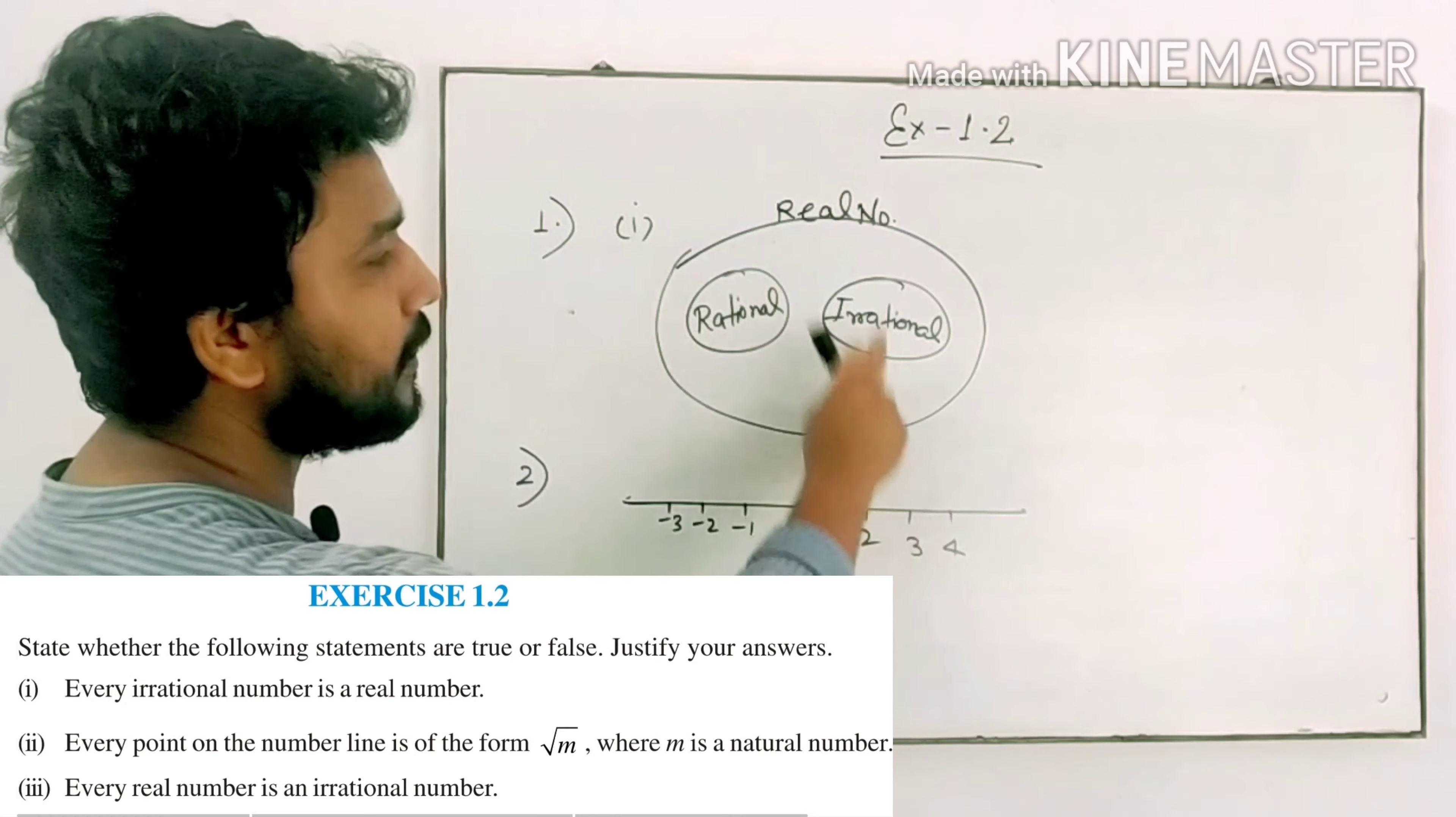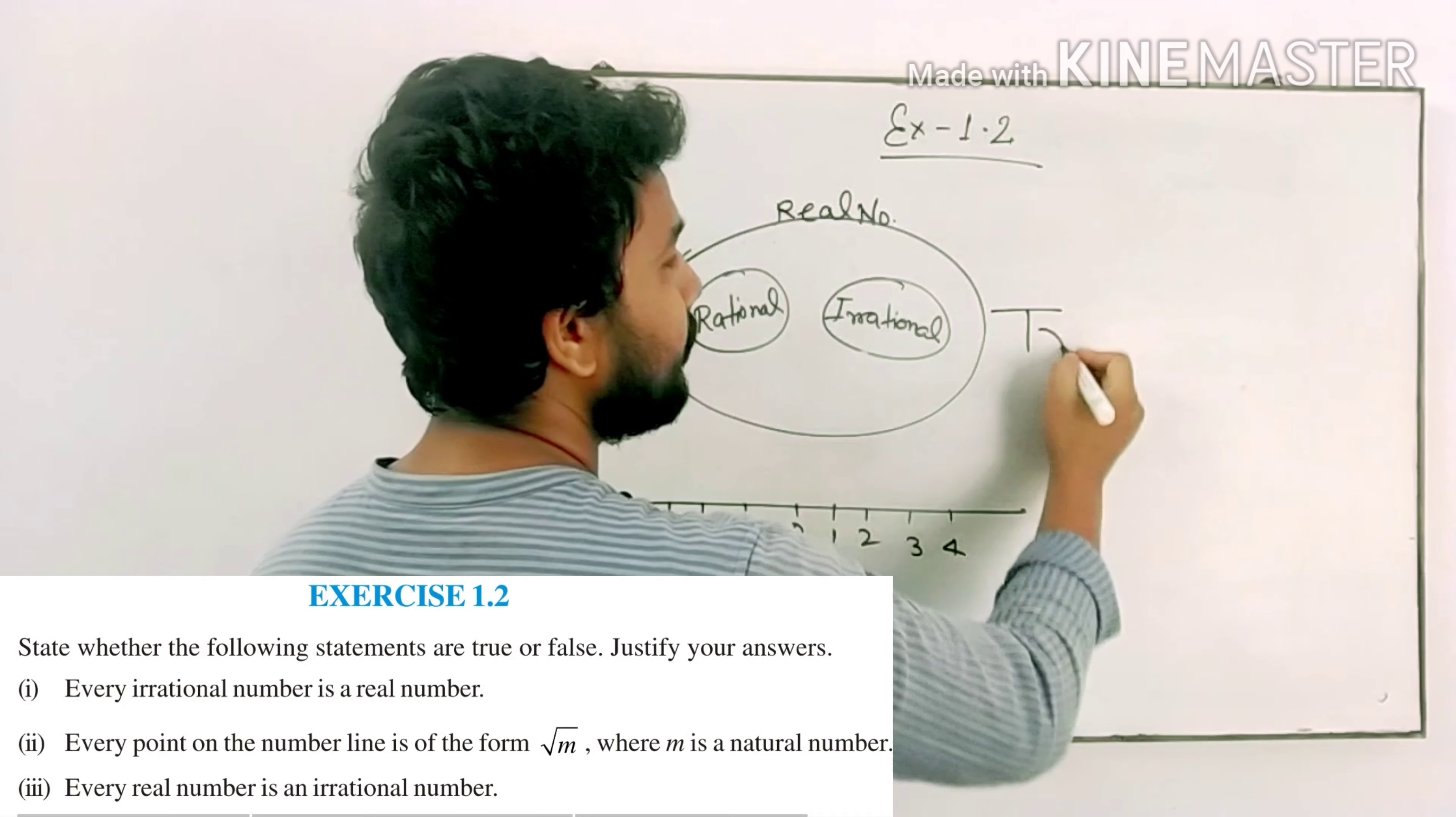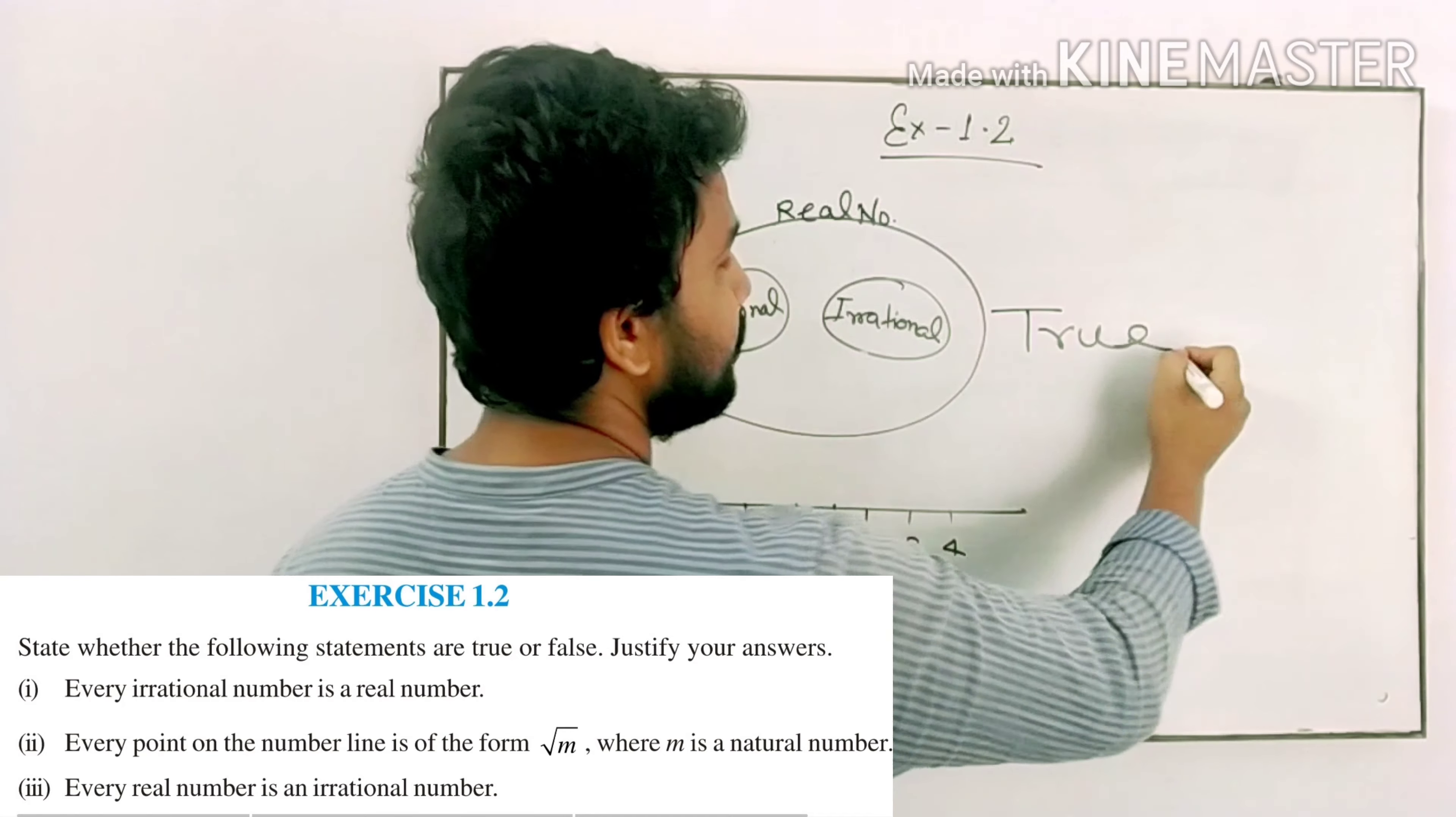Because in the real numbers, rational and irrational are both included. So every rational number is a real number - true. The answer is true.